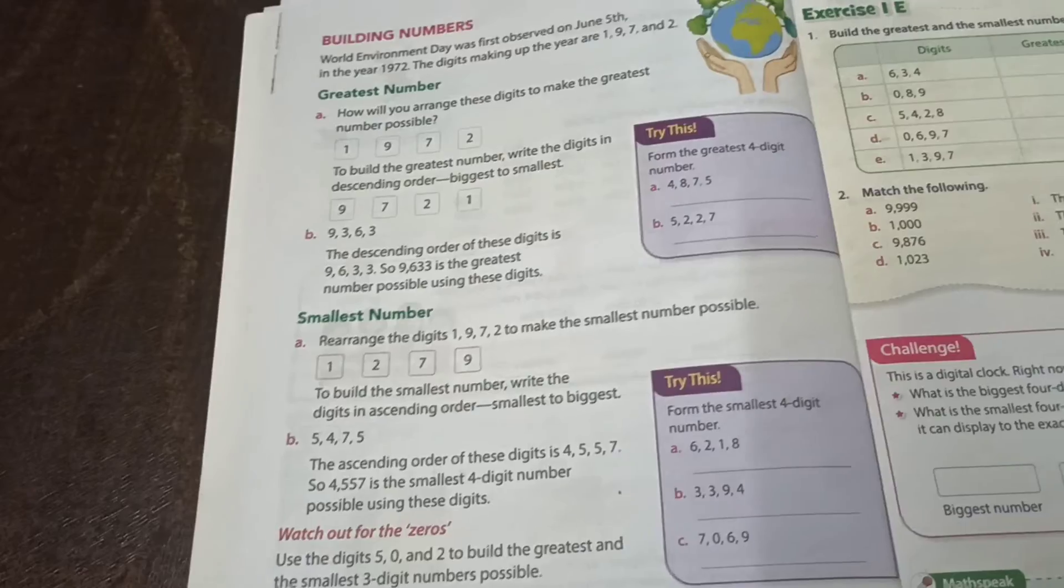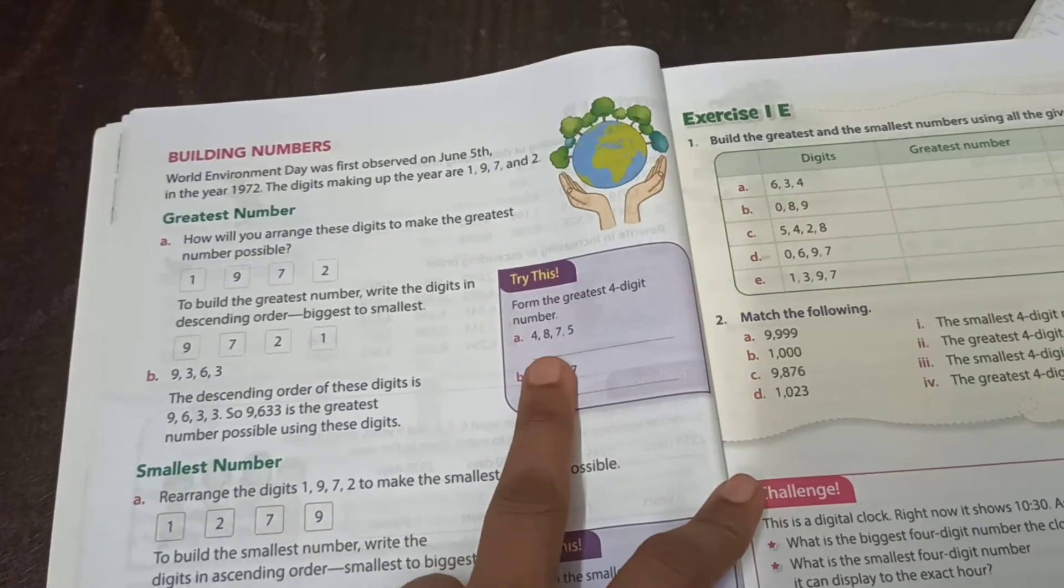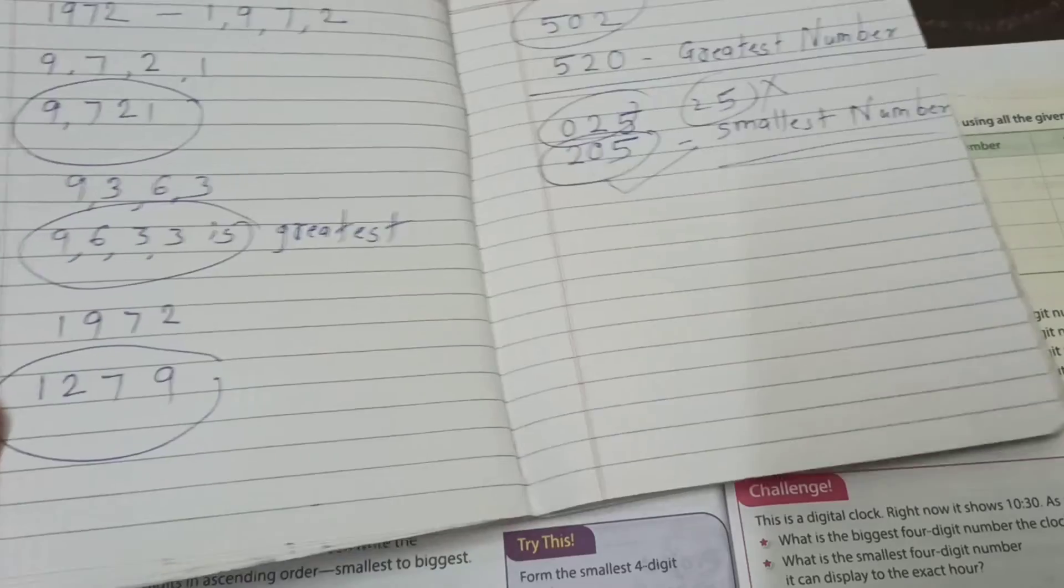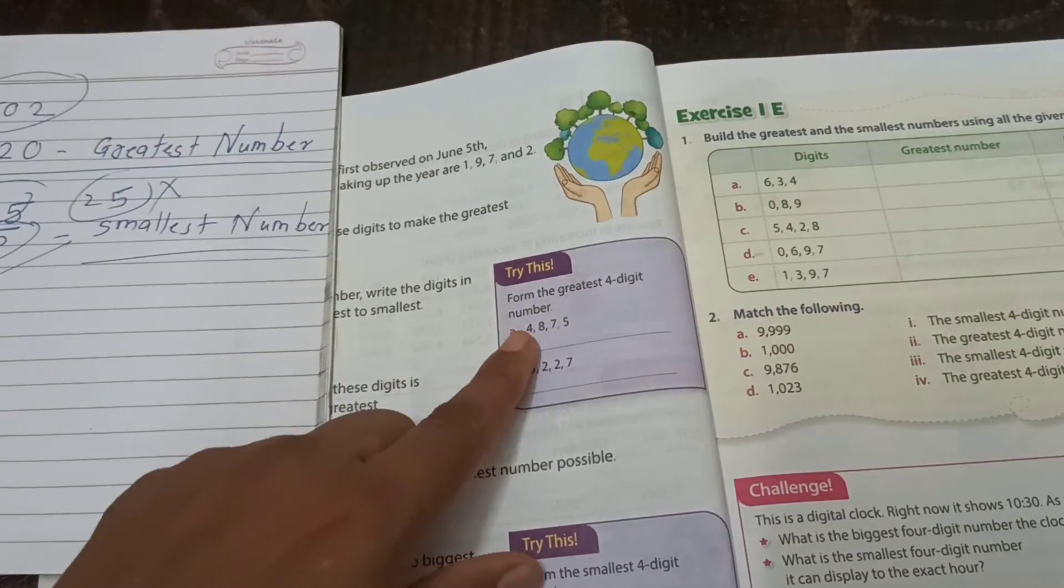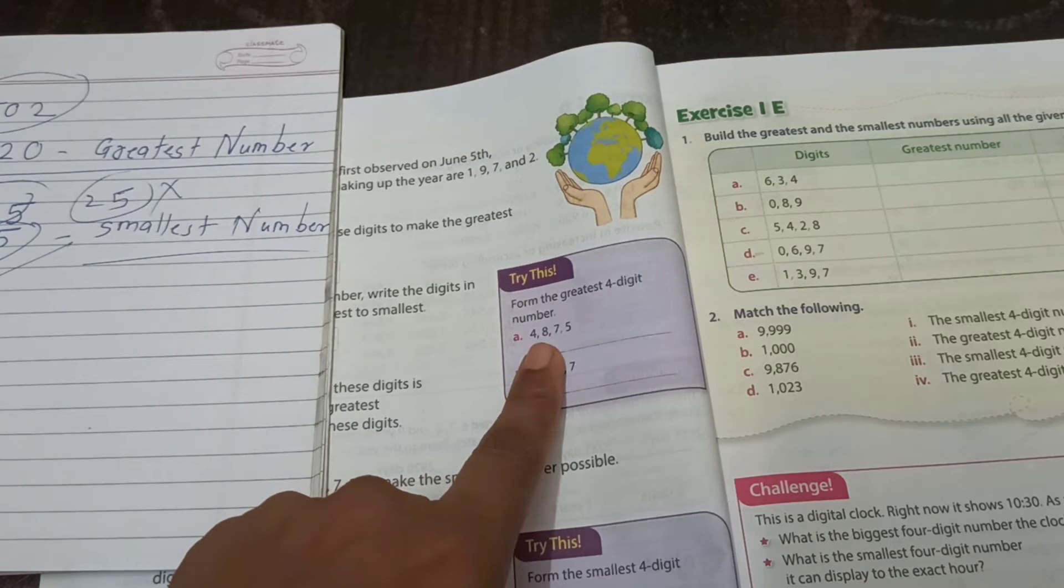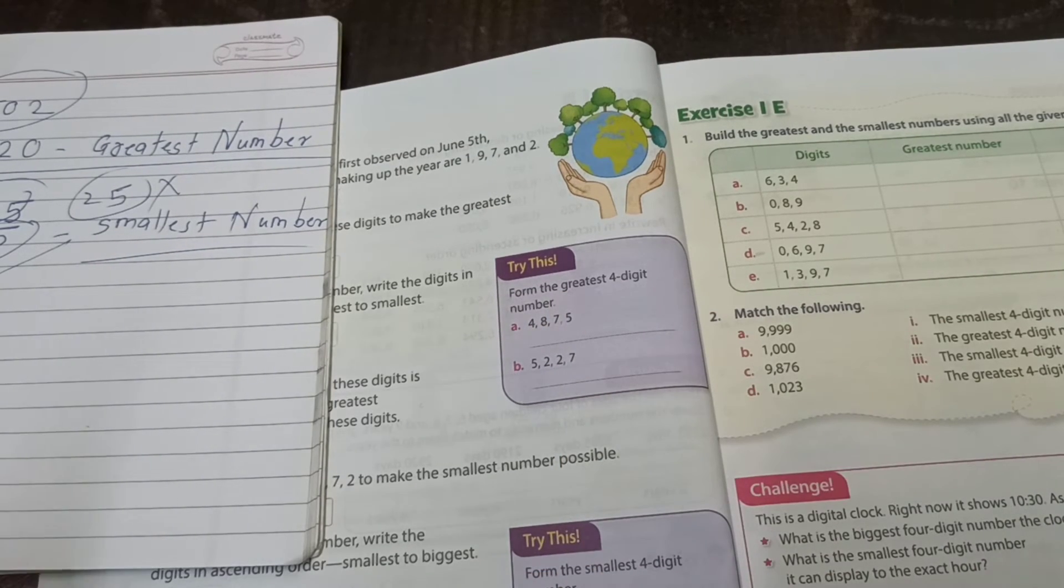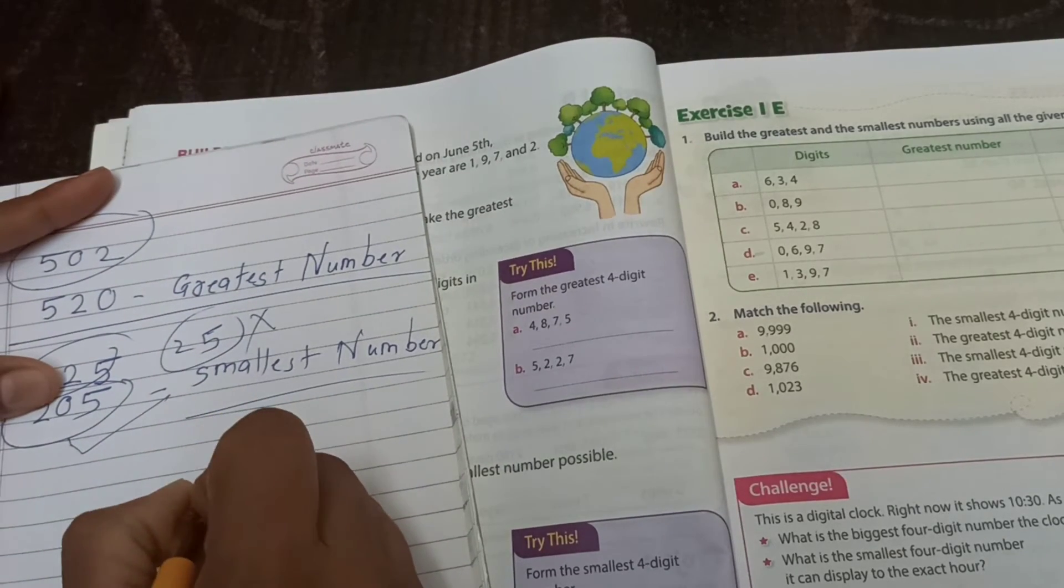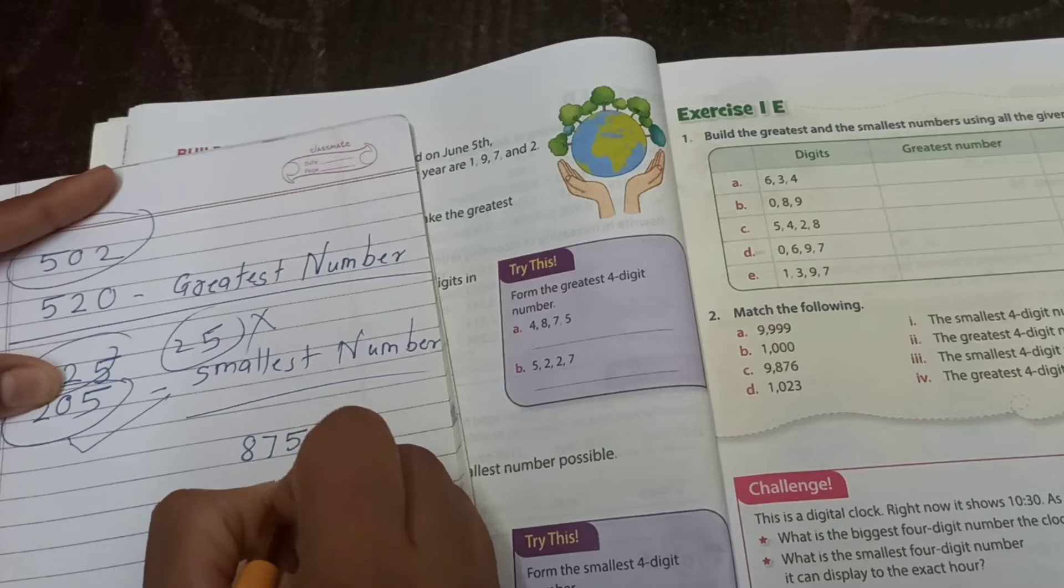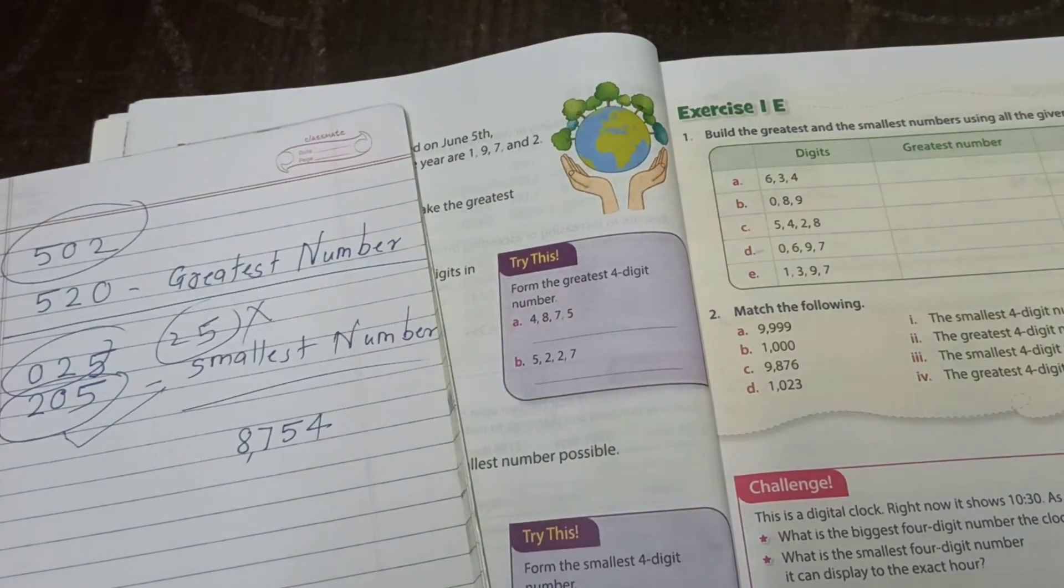Then see here. In a try this section, from the greatest four digit numbers, they given here 4, 8, 7, 5. Yes, who can tell me? Parnavi raise here hand. Parnavi tell us, make your greatest number using all four digit number. Yes, 8, 7, 5, 4. Very good. Means we got 8,754. This one a greatest number using 4, 8, 7, 5.